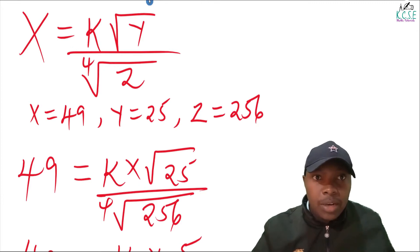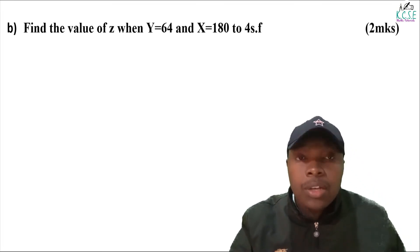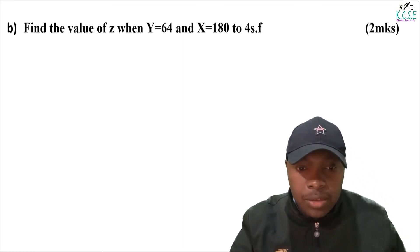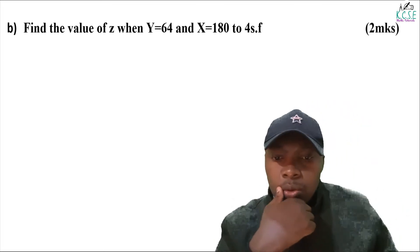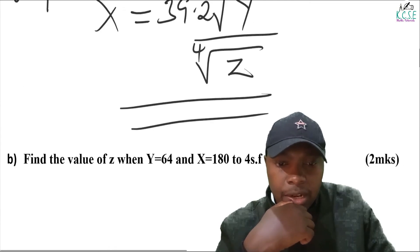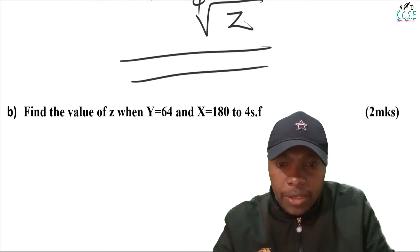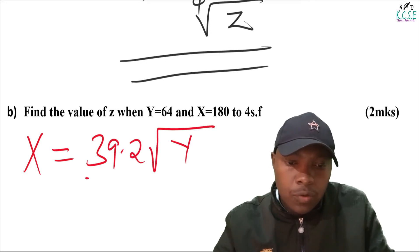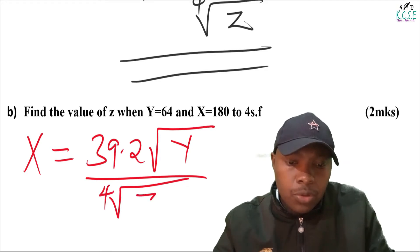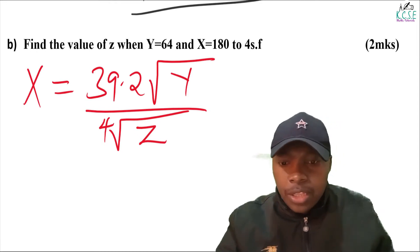Let's go to part B of the question: find the value of z when y equals 64 and x equals 180, to four significant figures. We use the equation connecting x, y and z that we obtained initially. So x equals 39.2 times the square root of y, divided by the fourth root of z. We substitute the values of x and y to obtain z.